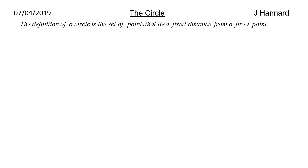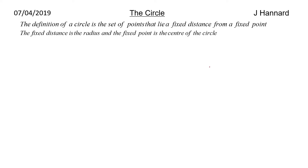So let's get into it. The definition of a circle is a set of points that lie a fixed distance from a fixed point. The fixed distance is the radius and the fixed point is the centre of the circle.